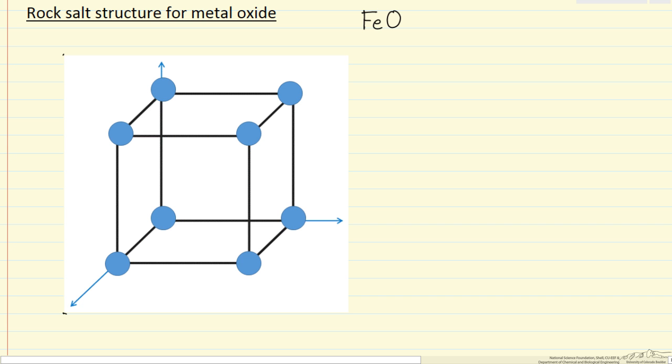It's a cubic structure, and I'll build the structure up to make it a little easier to visualize. What I'm looking at initially is just the oxygen atoms, so these blue circles represent just the oxygen atoms in the structure, an oxygen atom at each corner of the cube.